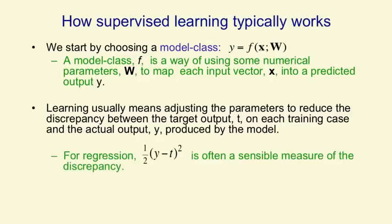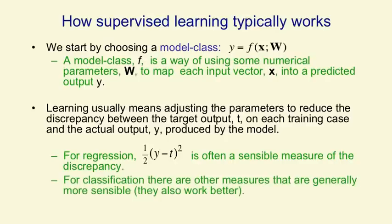An obvious measure of that discrepancy, if we're using real values as outputs, is the squared difference between the output from our system y and the correct output t. We put in a factor of one half so it cancels the two when we differentiate. For classification, you could use that measure, but there are other more sensible measures which we'll come to later, and these more sensible measures typically work better as well.